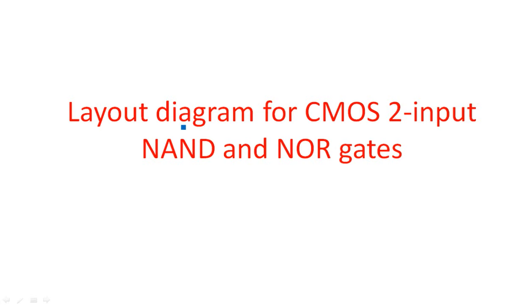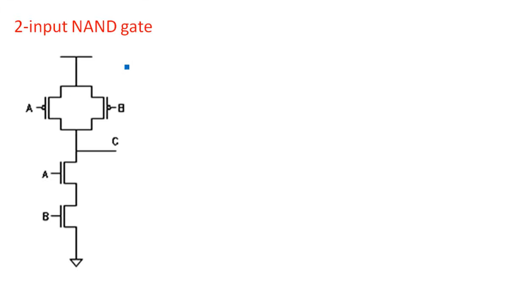Later we will see the layout diagrams of these two. In the previous videos, I gave you the idea of how to draw CMOS circuit diagrams. The output C equals AB bar — NAND is nothing but AB complement. The complementary metal-oxide semiconductor by default gives you the complemented form, so no need to produce a separate complemented output. By default, based on this arrangement, the output gives you the complemented form.